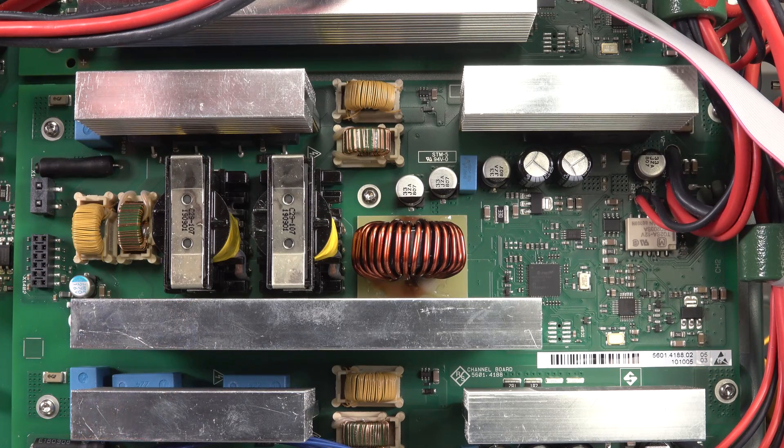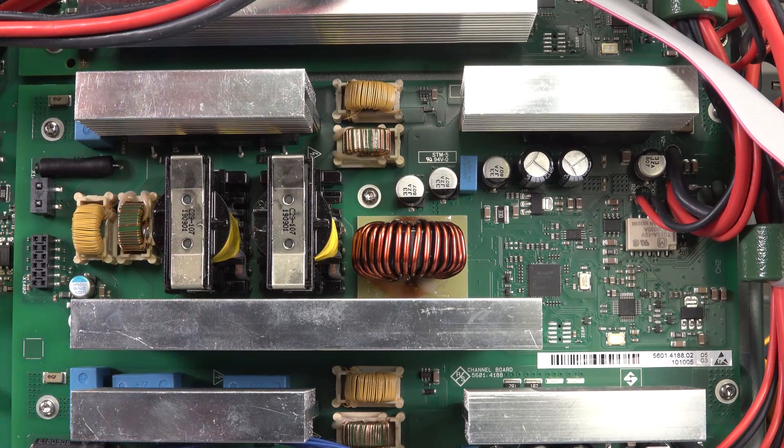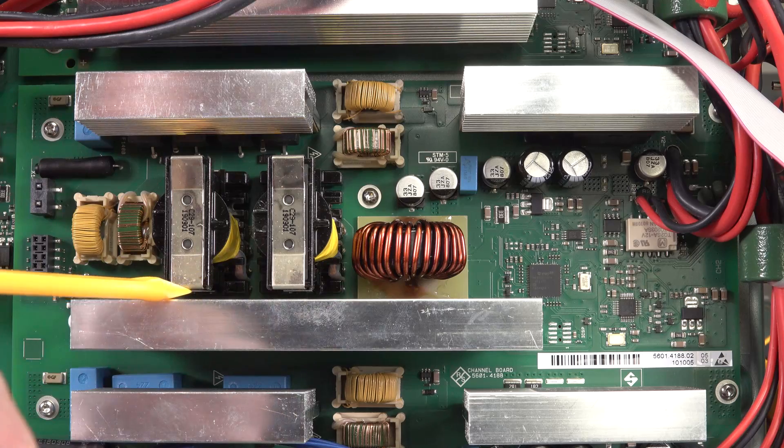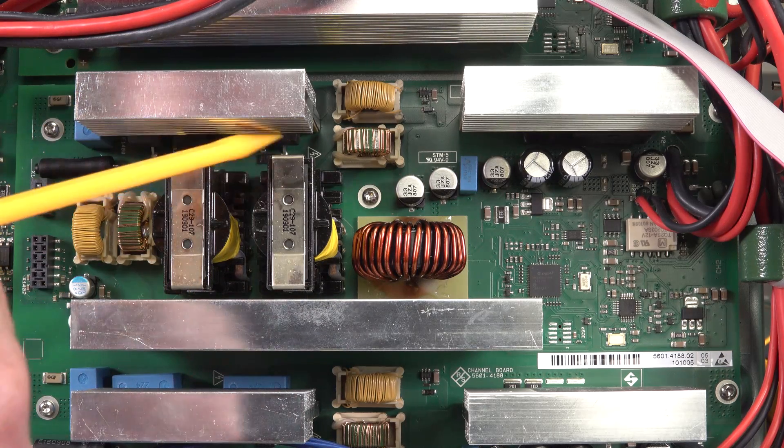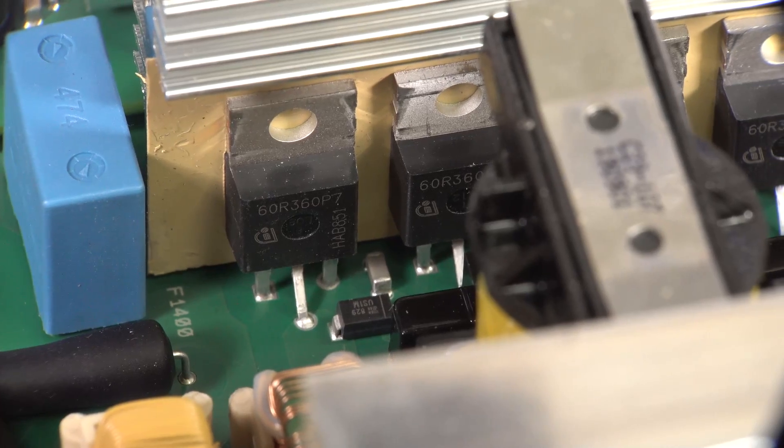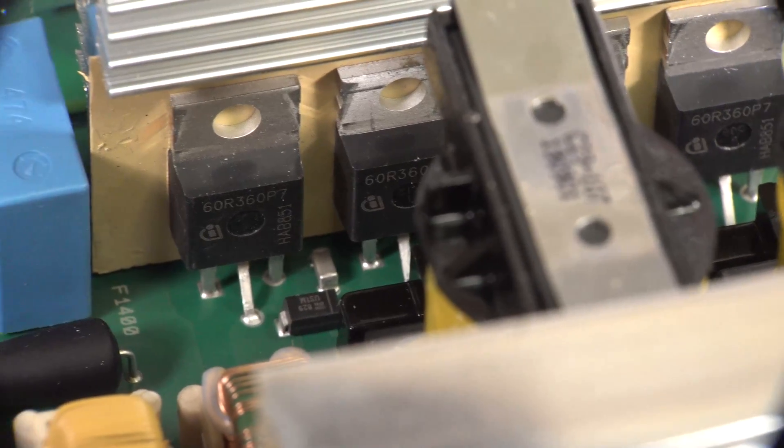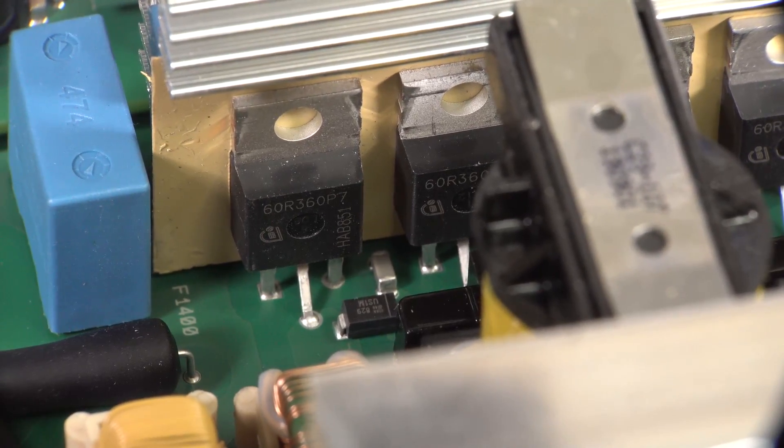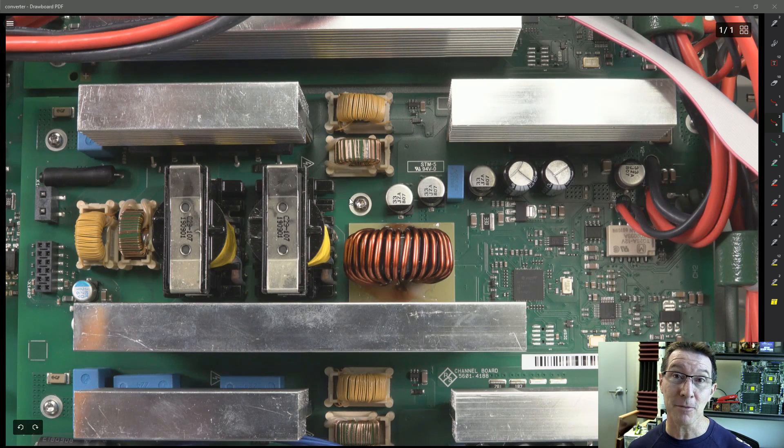But I think we're gonna see that line up here. We've got ourselves our four diodes down here. We've got ourselves four MOSFETs under here, down on their own heatsink down there. There are four 60R360s. So yeah, I'm pretty sure this is a resonant mode power supply, and that makes sense.